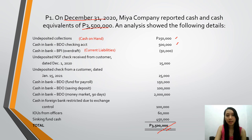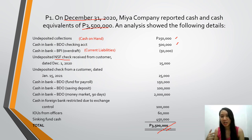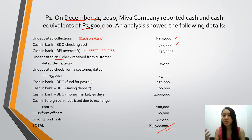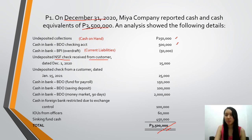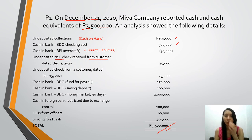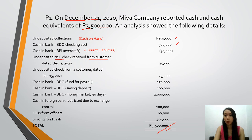Next: un-deposited NSF check. NSF means 'no sufficient fund' — the bank has no money, meaning the check bounced. We received it from a customer. We thought we were receiving money but unfortunately the customer's bank had no funds. So we actually received no money. The 15,000 cannot be included in cash — it's still a receivable.